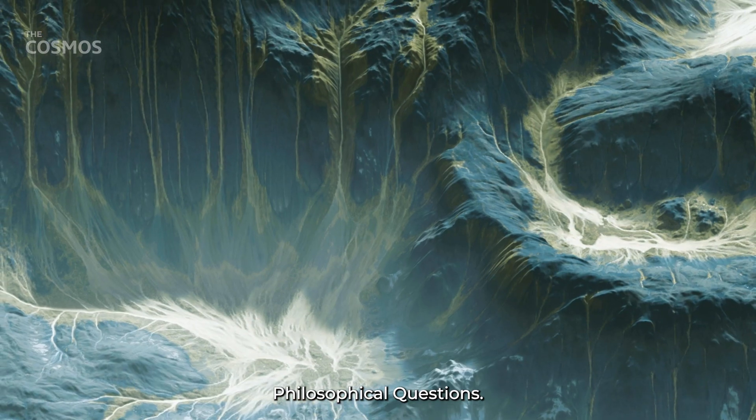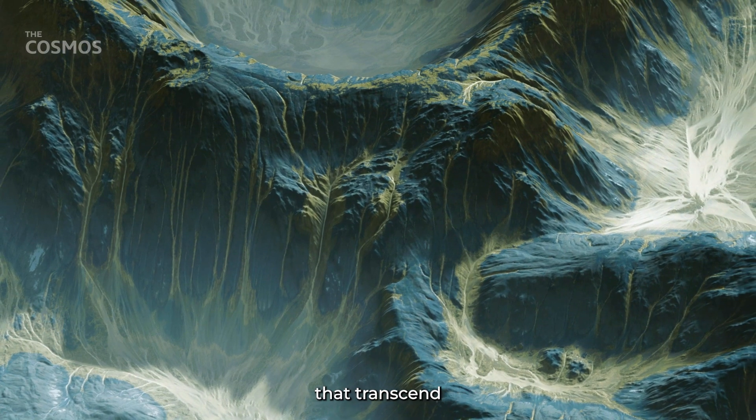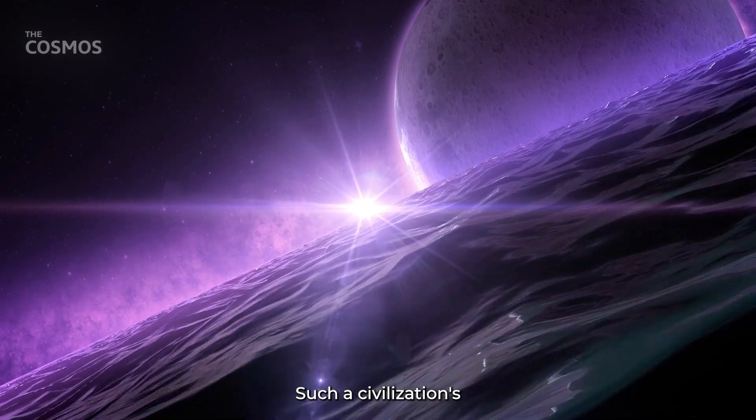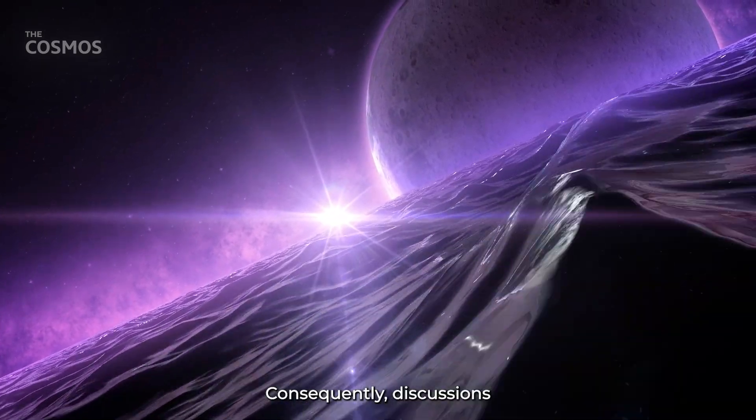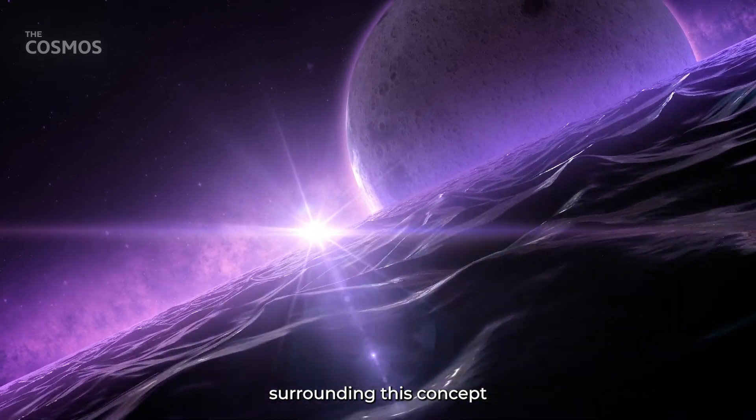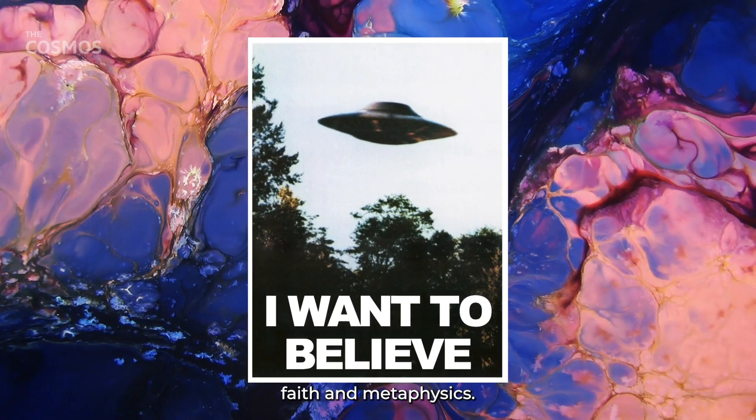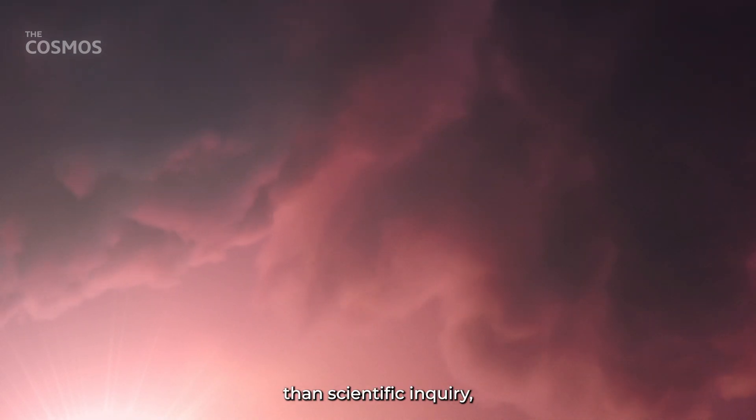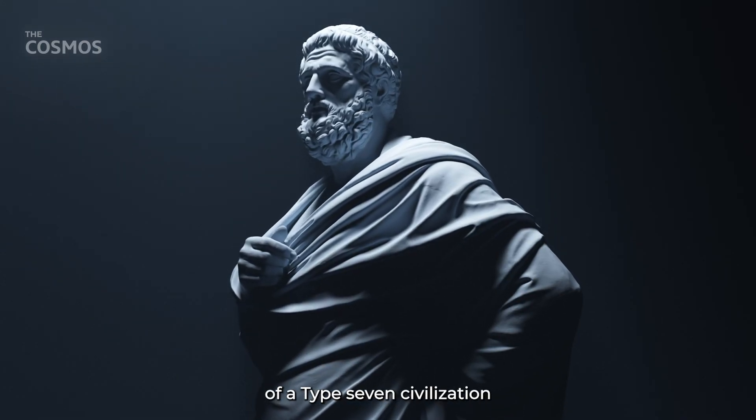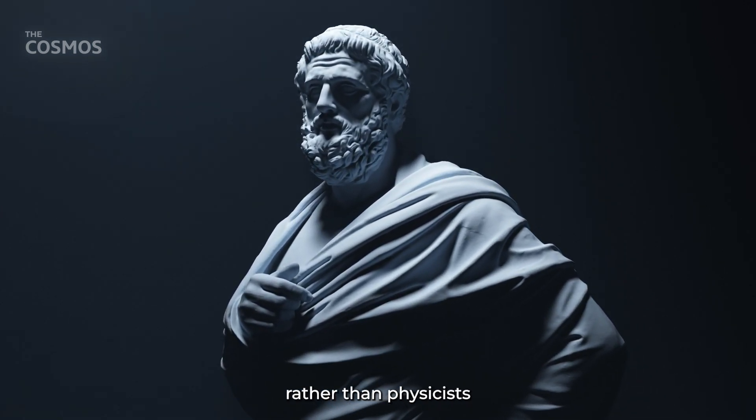Philosophical Questions. The idea of a Type 7 civilization touches on deep philosophical and theological questions that transcend empirical science. Such a civilization's capabilities might be equated with those attributed to a deity or supreme being. Consequently, discussions surrounding this concept often deviate from empirical evidence and enter the realms of belief, faith, and metaphysics. Engaging with these profound questions involves a different set of tools and approaches than scientific inquiry, and they may not lend themselves to definitive answers or conclusions. The exploration of a Type 7 civilization may be more appropriate for theologians or philosophers, rather than physicists or astronomers.